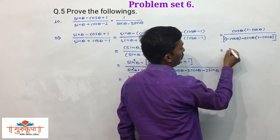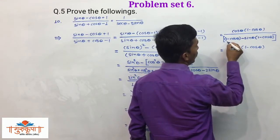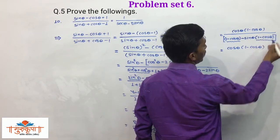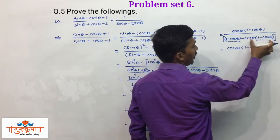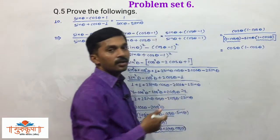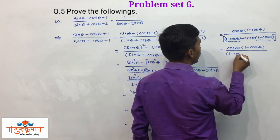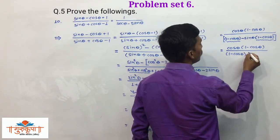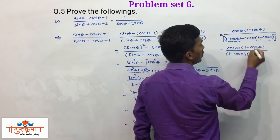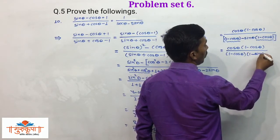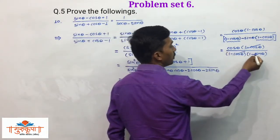Now we take (1 - cosθ) common from both denominator terms. After factoring, (1 - cosθ) cancels from numerator and denominator. What remains is cosθ upon (1 - sinθ). So we get the simplest form of the LHS: cosθ/(1 - sinθ).